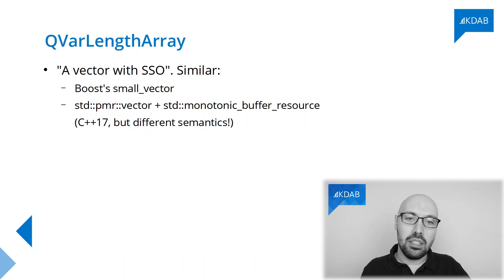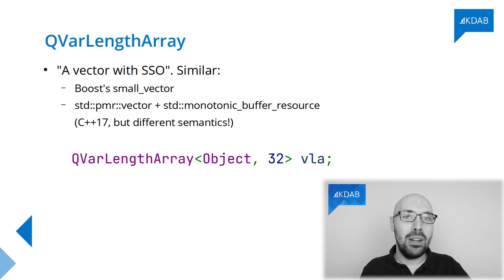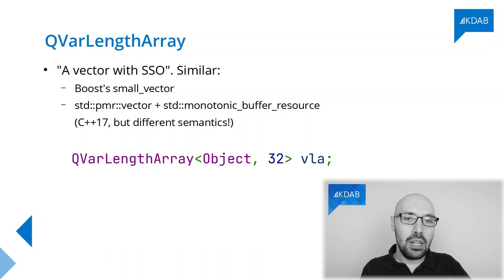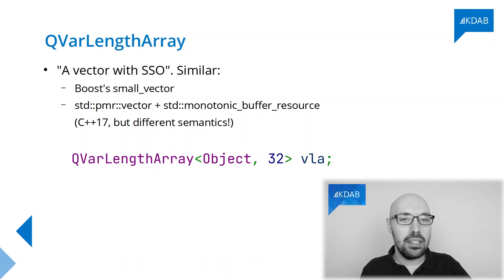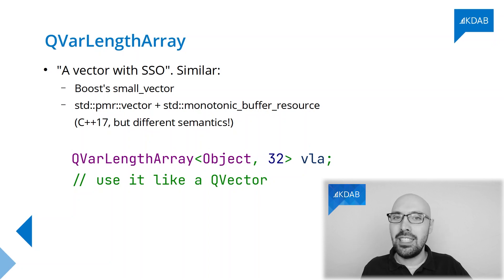How do you use a QVarLengthArray? You simply declare one, define the data type it needs to hold — in this case just Object — and optionally define how much space needs to be pre-allocated. 32 is the number of objects inside the container, not a size in bytes. Once you do that, the QVarLengthArray object has that pre-allocated space inside of it, and you can use it just like a plain vector — essentially an identical API.